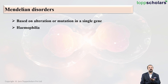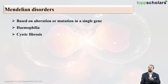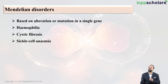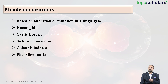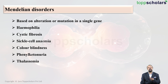The first example is Haemophilia, also known as the bleeder's disease — patients bleed a lot and do not clot properly. Next, we have cystic fibrosis, a disease which affects the mucus-secreting cells of the body. Then sickle cell anemia, in which the RBCs become sickle-shaped when oxygen concentration is low. We also have color blindness, which is self-explanatory. Next is phenylketonuria, a disorder involving a buildup of the amino acid phenylalanine in the body, and finally thalassemia, in which the patient has a low amount of haemoglobin in the blood.